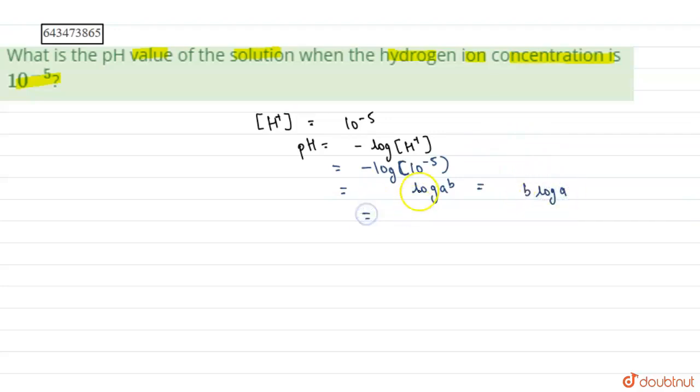So similarly, that 10 to the power minus 5, this minus 5 will become the coefficient and we will get 5 log 10. As we all know, log 10 is 1.